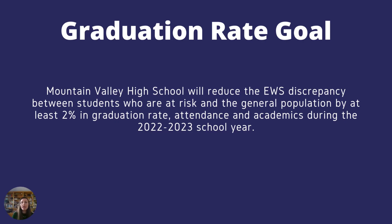For high schools, in addition to ELA, math, and science as your greatest academic needs, you can include goals centered around graduation rates and college and career readiness. So let's quickly look at a goal that might deal with graduation rates. At Mountain Valley High School, the goal is to reduce the EWS discrepancy between students who are at risk and the general population by at least 2% in graduation rate, attendance, and academics during the 2022-2023 school year.